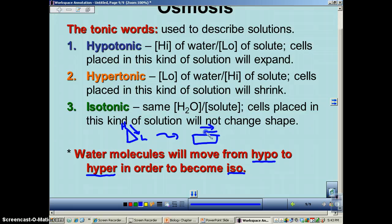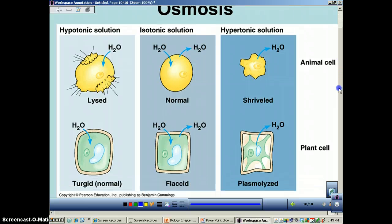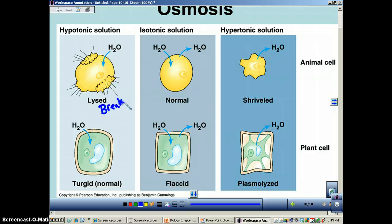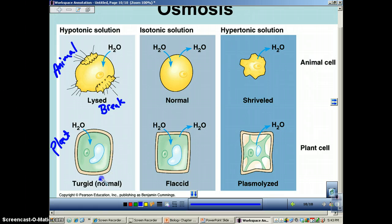In an isotonic solution, things are at equilibrium — no different from what we learned about diffusion. You're moving from an area of high concentration to low concentration until equilibrium is reached. In a hypotonic solution, water molecules move in so much that the cell can burst — that's what lysis means, it means to break. This is an animal cell. Plant cells cannot burst because of the cell wall. Plant cells like to be in a hypotonic solution because it makes the cell push out and stand up nice and stiff — this is called turgid.